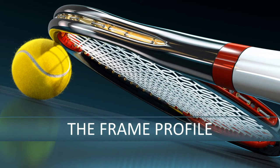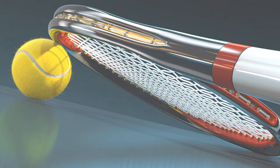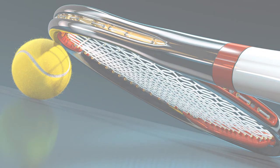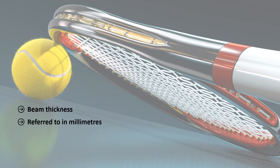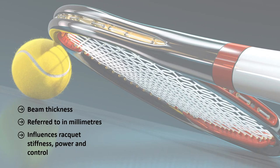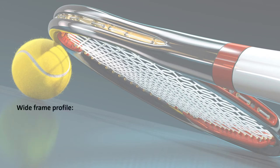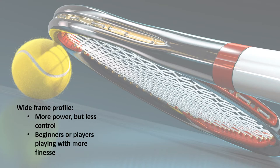Let's take a look at the racket's frame profile, which is actually the thickness of the beam. Its value is referred to in millimeters. The thickness of the frame influences the stiffness of the racket, power, and control. The wider the profile, the more power the player will have but less control. It is therefore suitable for beginners or players playing with more finesse than power.